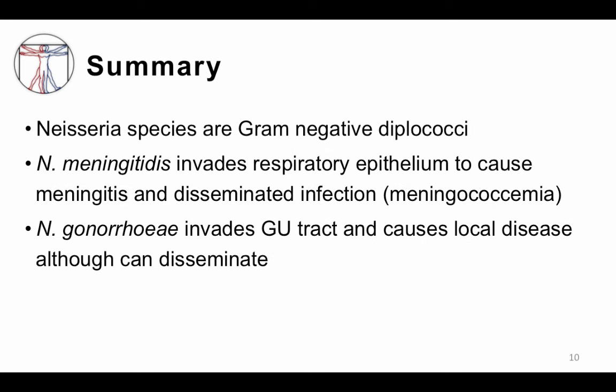In summary, Neisseria species are gram-negative diplococci, kidney bean shaped. Neisseria meningitidis invades the respiratory epithelium, has a predilection to go to the CSF and cause meningitis, and can cause disseminated meningococcemia — the lipooligosaccharide causes pan-stimulation of the immune system. Neisseria gonorrhea predominantly invades the GU tract using pili to attach, causes localized disease but can occasionally disseminate.